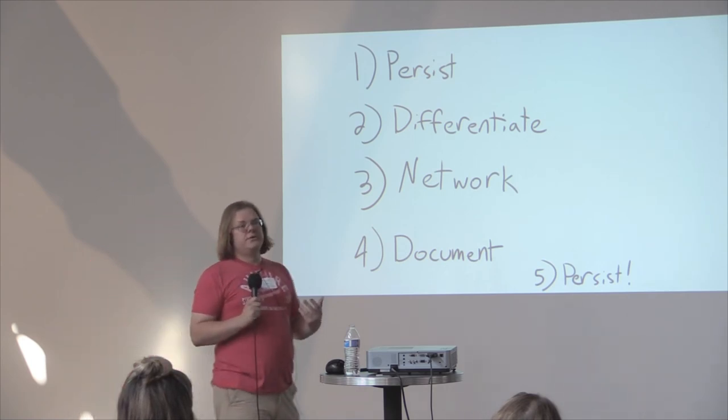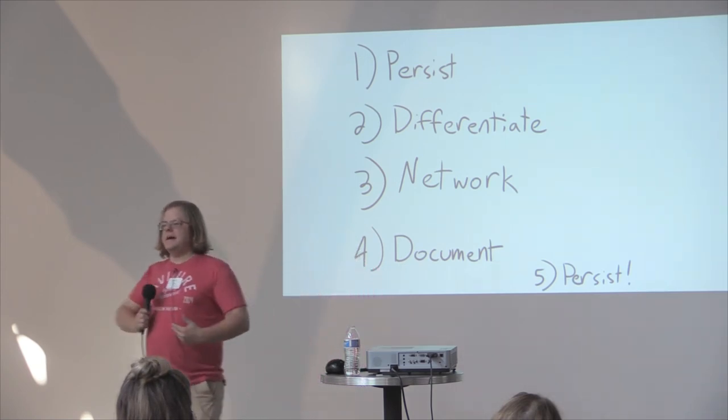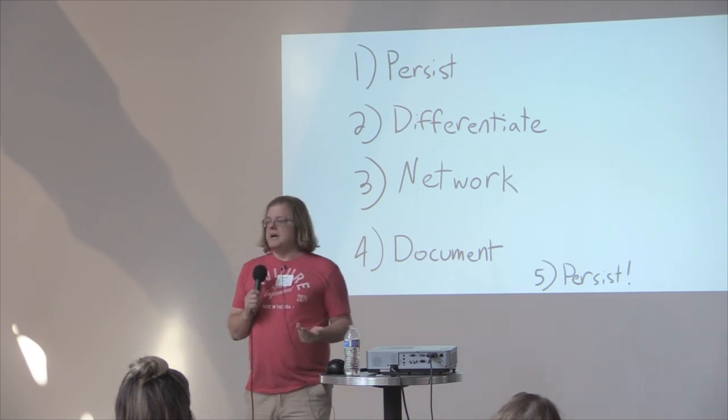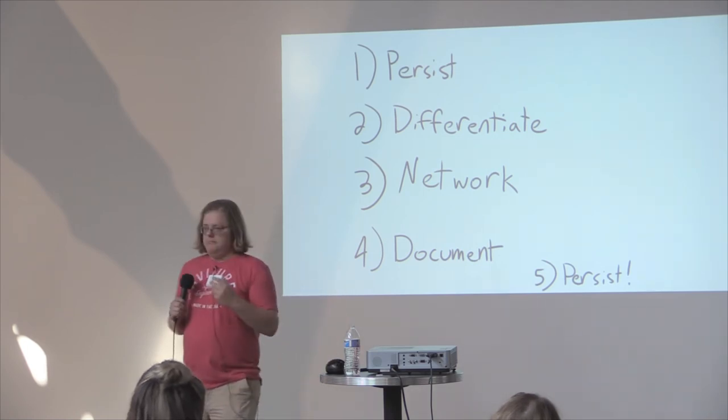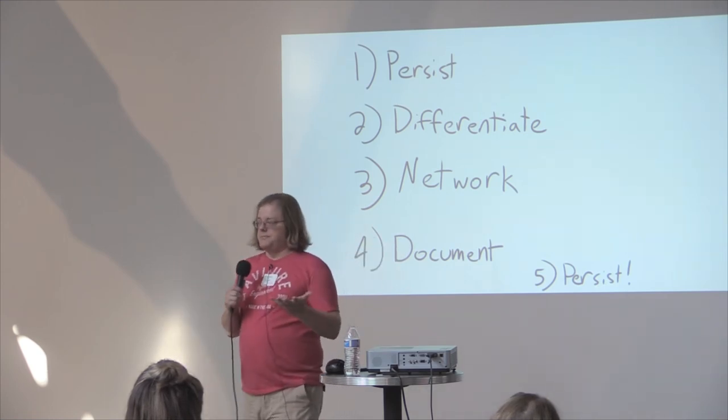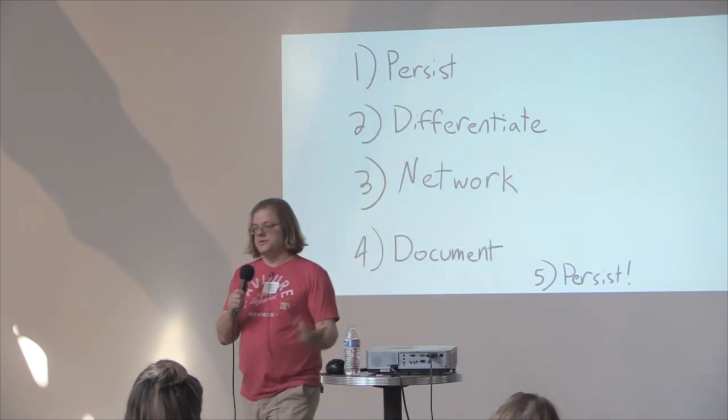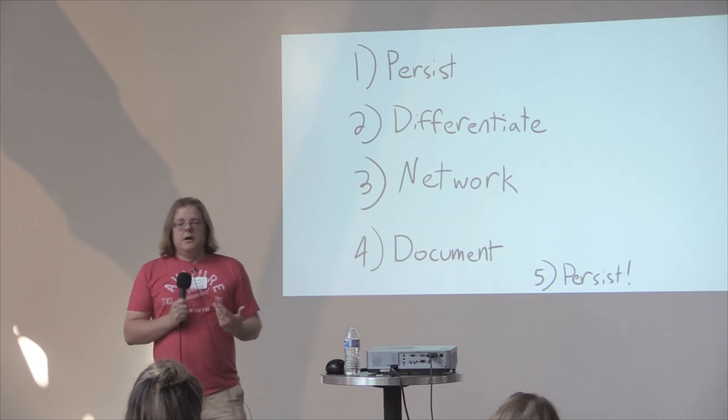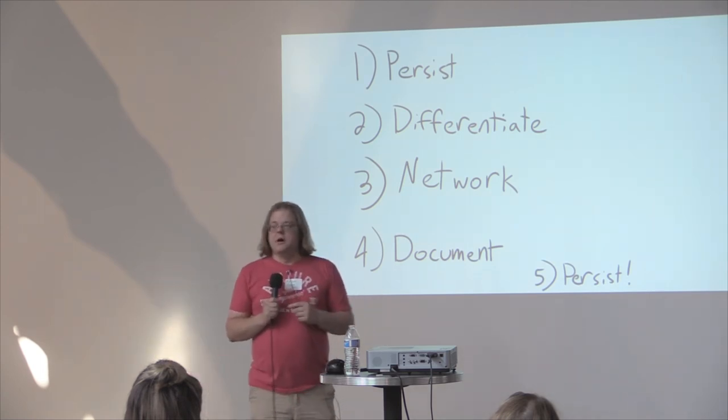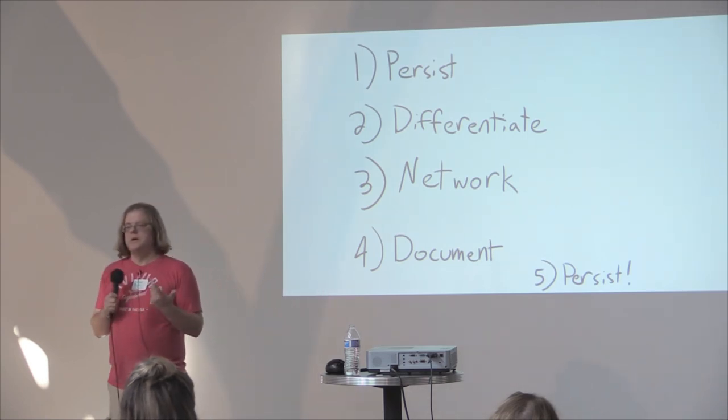If you get told no, wait until after the conference for starters but then come back and email the organizers and say hey I was interested, what didn't you like about my abstract, what could I do better? Is this conference just not for my type of talk? Am I doing something dumb in the abstract that you think made your decision different?